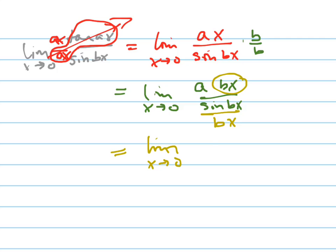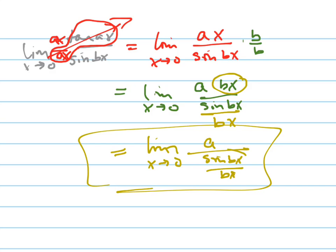So this is the limit as x goes to 0 of a over sine bx over bx. Imagine if I gave you this right here and I said, how do I divide by a fraction? Multiply by the reciprocal. That's why this up here, that's why I could have done that. I just flip it down to the bottom. Hopefully that makes sense.